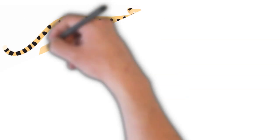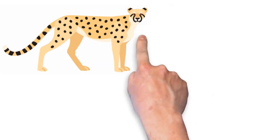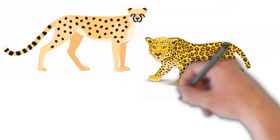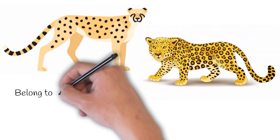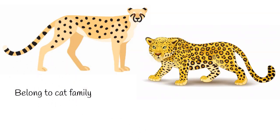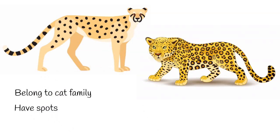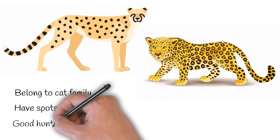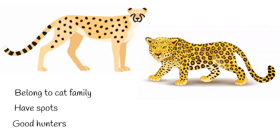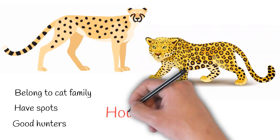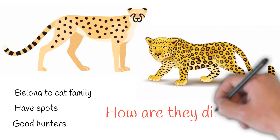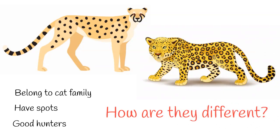Welcome to another video of Simply eLearn. You must be aware of cheetahs and leopards. Both belong to the big cat family. Both of them have spots on their bodies and are very good hunters. So how are they different from each other? Let's have a look at it.